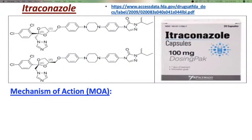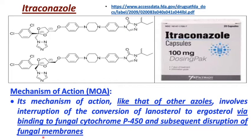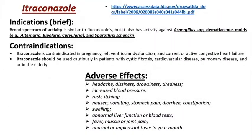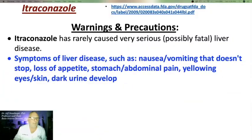Itraconazole — its structure and package insert are shown here. Its mechanism of action, like that of other azoles, involves binding to fungal cytochrome P450s to disrupt the fungal membrane. Itraconazole is indicated for Aspergillus, dimorphic molds, and Sporothrix schenckii. It is contraindicated in pregnancy and other conditions, and should be used cautiously in patients with cystic fibrosis, cardiovascular disease, pulmonary disease, or in the elderly. There are numerous adverse effects, and while rare, itraconazole has caused fatal liver disease.